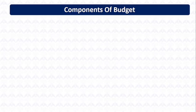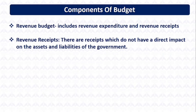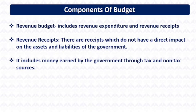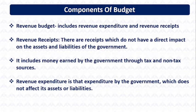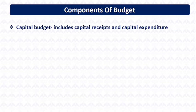The important components of the budget are: the Revenue Budget, which includes revenue expenditure and revenue receipts. Revenue receipts are those receipts which do not have a direct impact on the assets and liabilities of the government. It includes money earned by the government through tax and non-tax sources. Revenue expenditure is that expenditure by the government which does not affect its assets or liabilities — such as salary, interest payments, pensions, and administrative expenses.